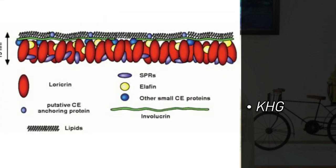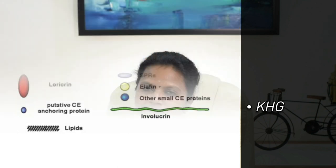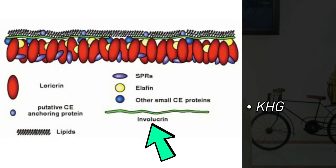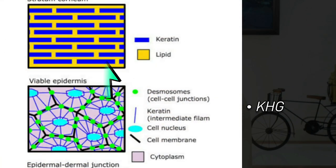Next we go to keratohyalin granules. Keratohyalin granules contain loricrin, involucrin, filaggrin, elafin, and others. Loricrin is the major component of the cornified envelope — 80% of the cornified envelope is formed by loricrin, and its structure is important for the stability and flexibility of the stratum corneum. Involucrin — the Latin term meaning envelope — is formed like an envelope. Filaggrin, otherwise known as filament aggregating protein, aggregates the keratin intermediate filaments into a macro-filament.